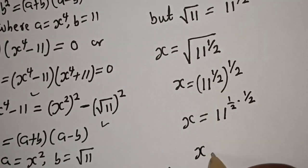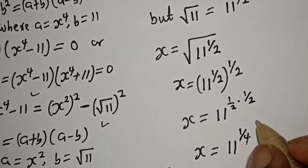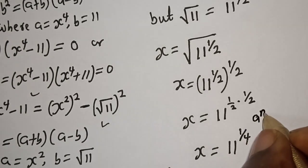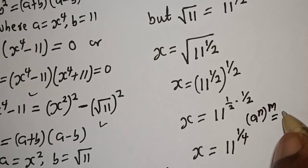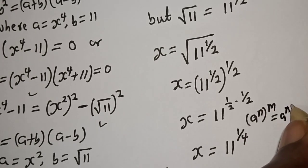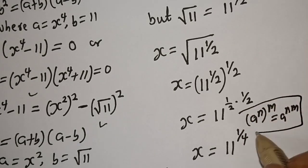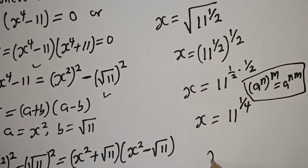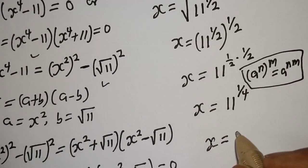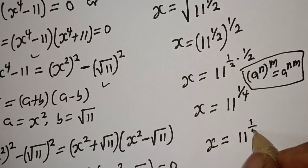So s is equal to 11 raised to power 1 over 4, using the rule that a raised to power n, to the power of m, is equal to a raised to power n times m. Therefore, our final answer is s is equal to 11 raised to power 1 over 4.